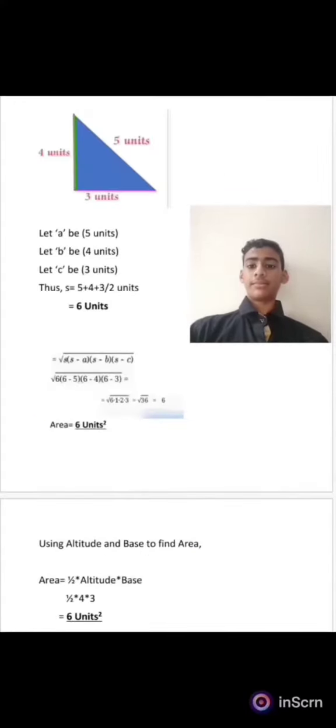Now let's look at an example. Let a be 5 units, b be 4 units, and c be 3 units. So the semi-perimeter will be 5 plus 4 plus 3 divided by 2, that is 6 units.